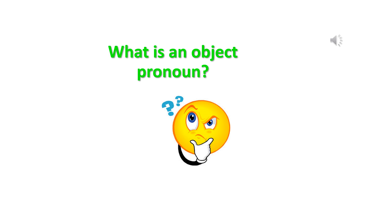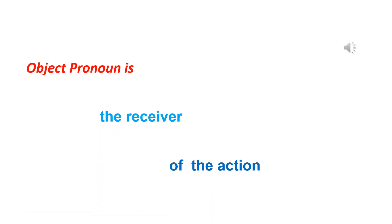What is an object pronoun? The object pronoun is the receiver of the action. In other words, the object pronoun is affected by the action — it is the receiver of the action done by the subject.